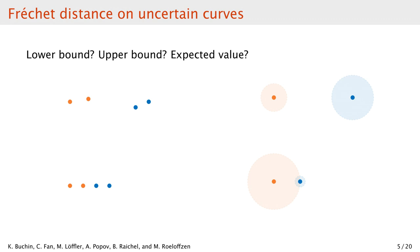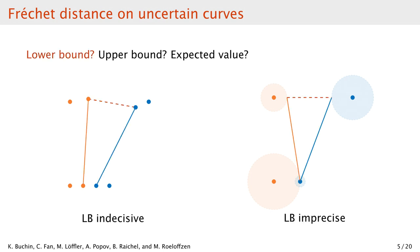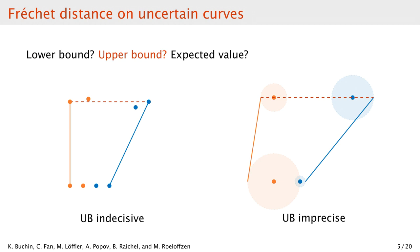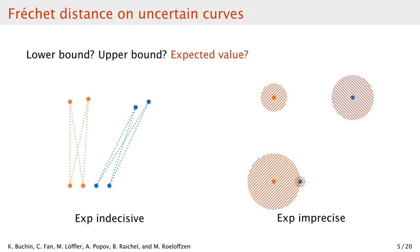With that in mind, we should define what we are looking at here. In these examples we have orange and blue curves. On the left, the points that are close together are possible locations for a single indecisive point. We can go over all the possible realizations of the two curves, and find the one that gives us the lowest or the highest Fréchet distance. For example, these realizations give us the lowest Fréchet distance, which we call a lower bound. The red line shows the bottleneck in the optimal matching. And these realizations give us the upper bound distance, so the largest possible distance. Finally, if we assume some probability distribution for each uncertainty region, we can talk about expected distance. Here we assume that each location is equally likely, so we assume a uniform distribution for each uncertainty region independently.